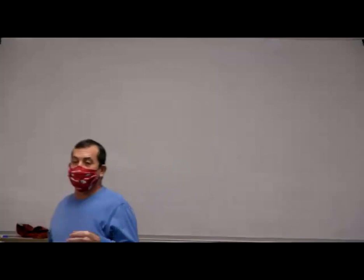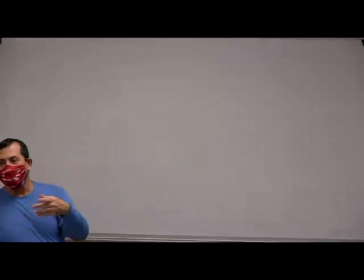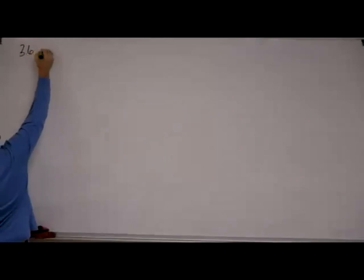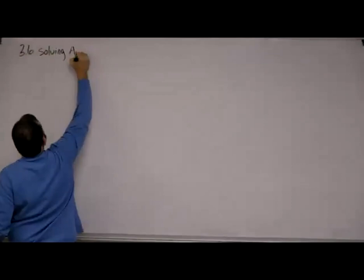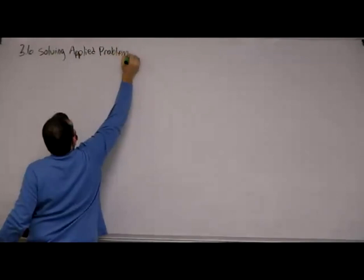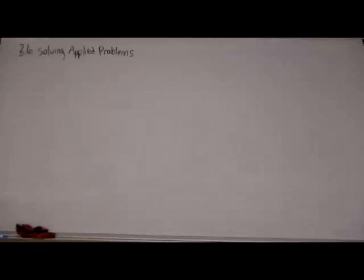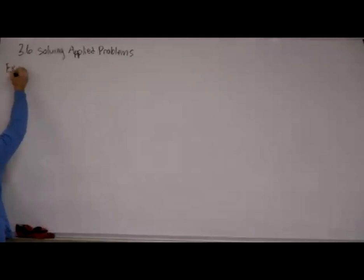Section 3.6 is pretty much the same as 3.5, although the difference is they give it to me in the form of a word problem and I have to figure out my equations before I can solve them. This is called solving the five problems. I did a triangle one at the end of class the other day, and I'm going to do the other two because there are only about three of them in the homework for 3.6.